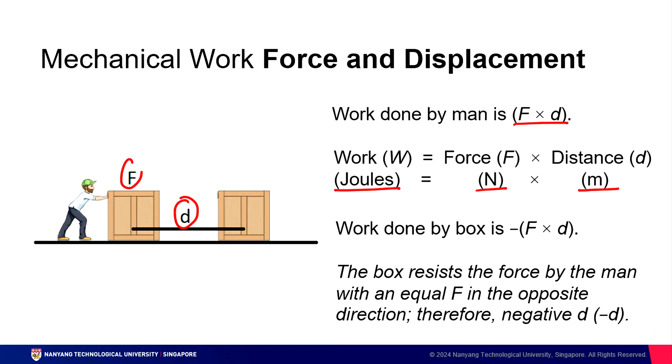Now, I want you to understand this concept. Even though the man is pushing the box across the displacement, across the floor, you need to understand from the point of view from the box, the box is also doing work. The box is essentially resisting the force of the man with an equal force in the opposite direction. That means the box is doing negative work. Hence, the work done by the box is negative F times d. You have to understand the concept of work and inverse work.